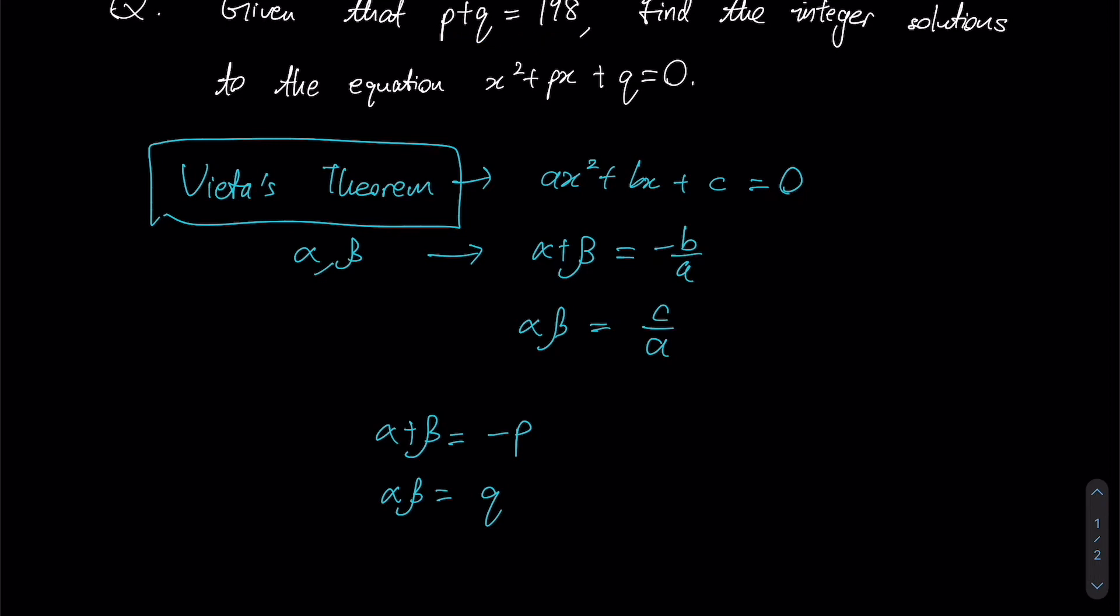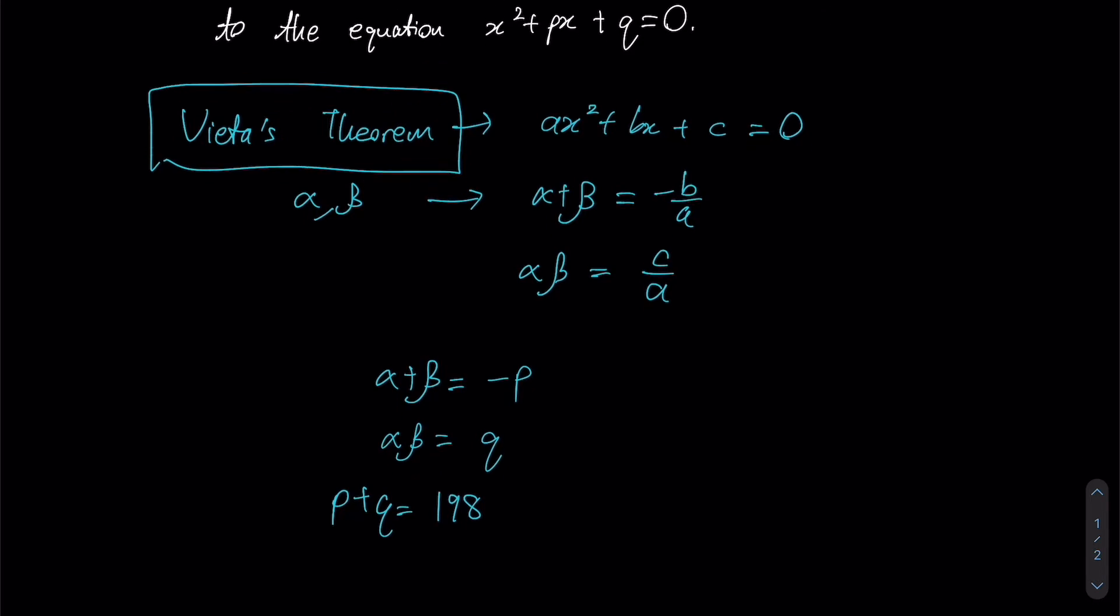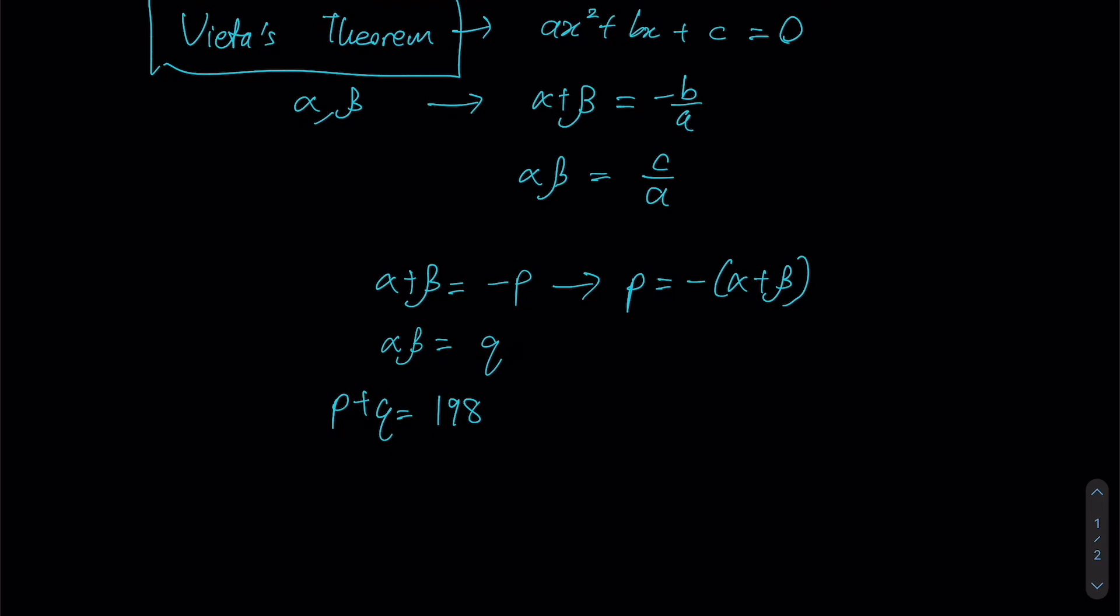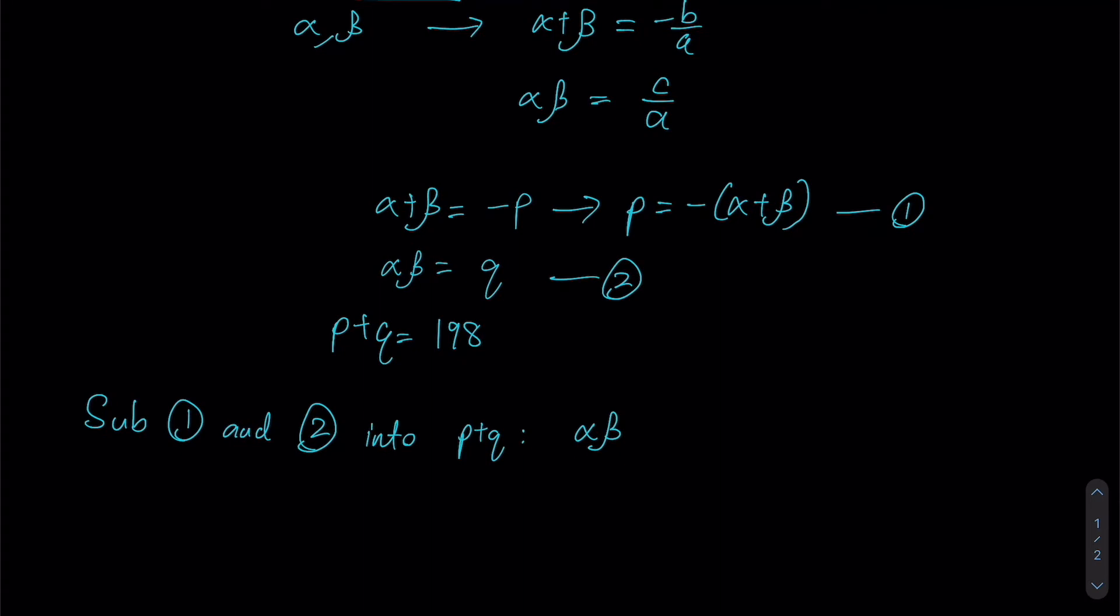The question further tells us that p + q equals 198. We do have q in the form of αβ, but right now we only have a value for -p. If we multiply by -1 on both sides, p will give us the negative of α + β. If this is equation 1 and the product gives us equation 2, we can sub 1 and 2 into p + q. So p now becomes -(α + β), q becomes αβ, so essentially what you get is αβ - α - β = 198.